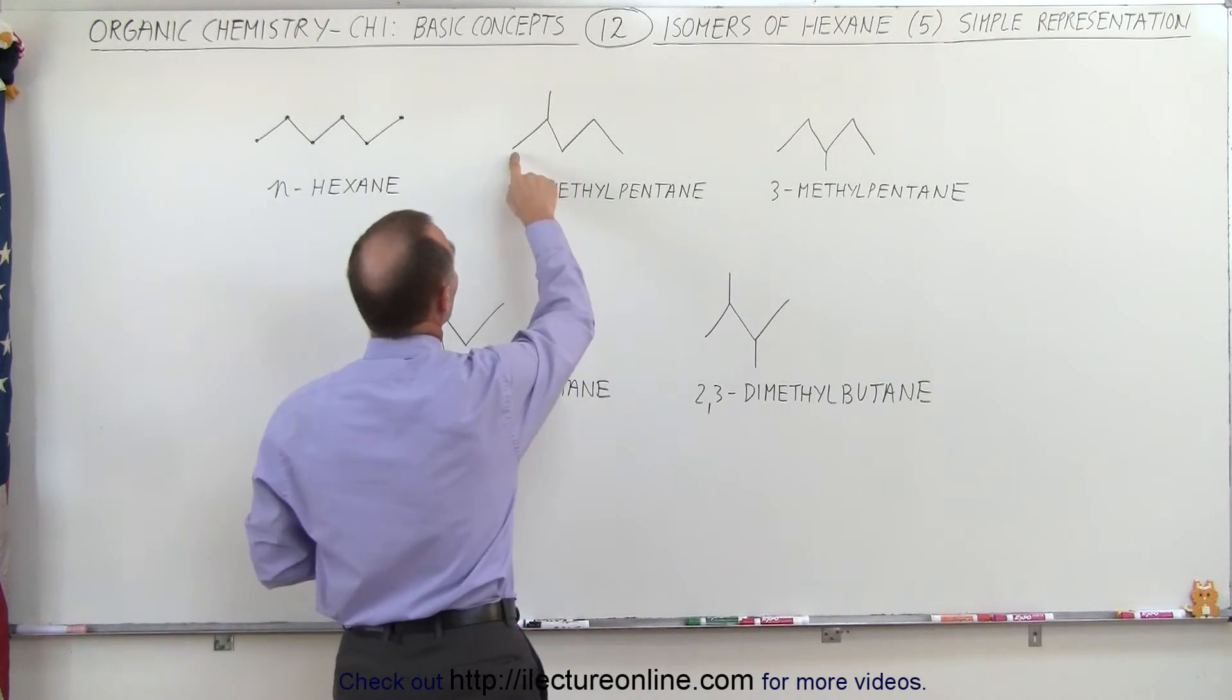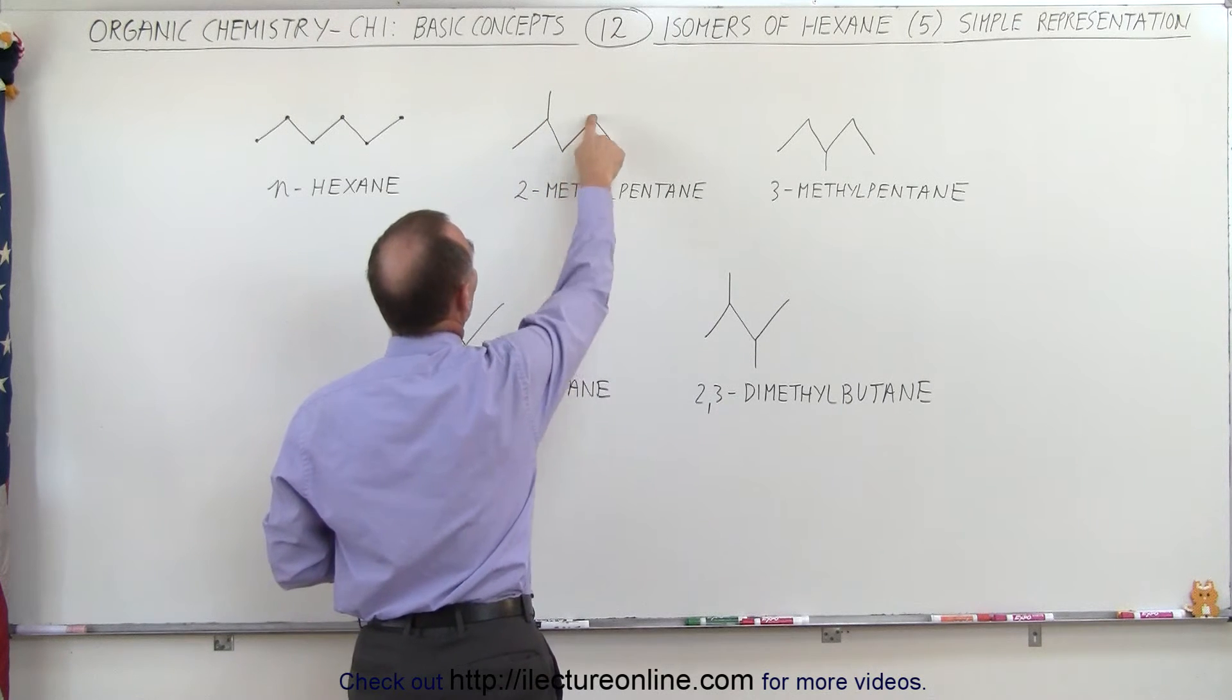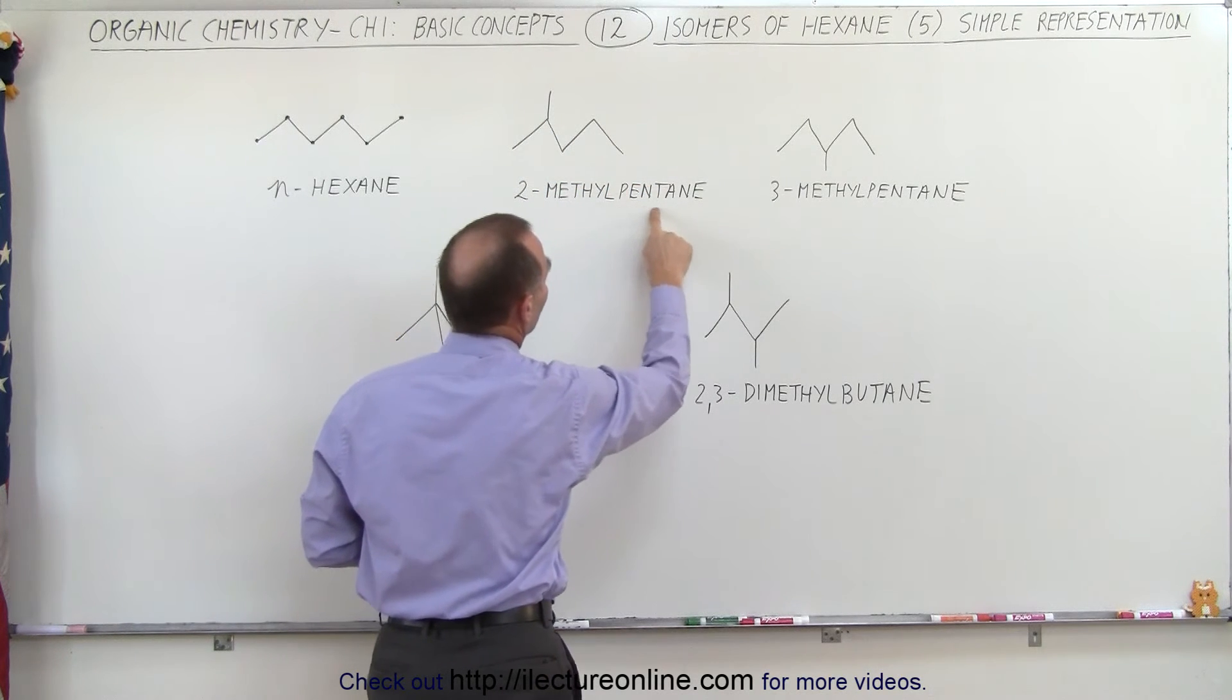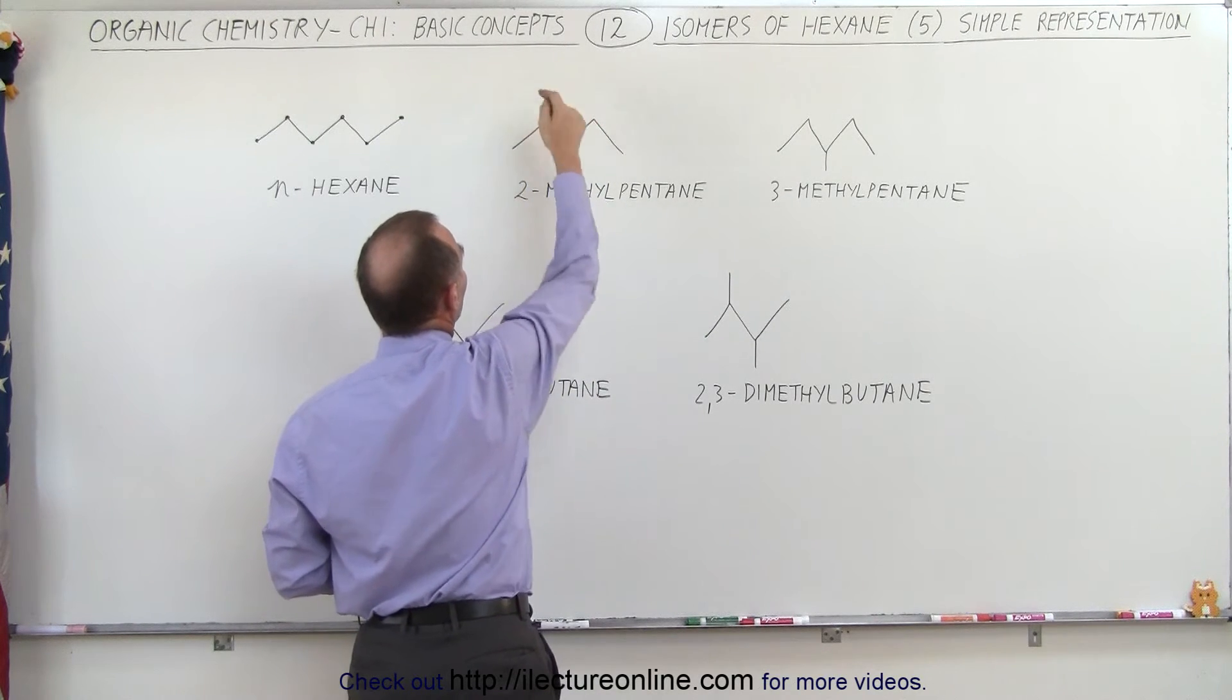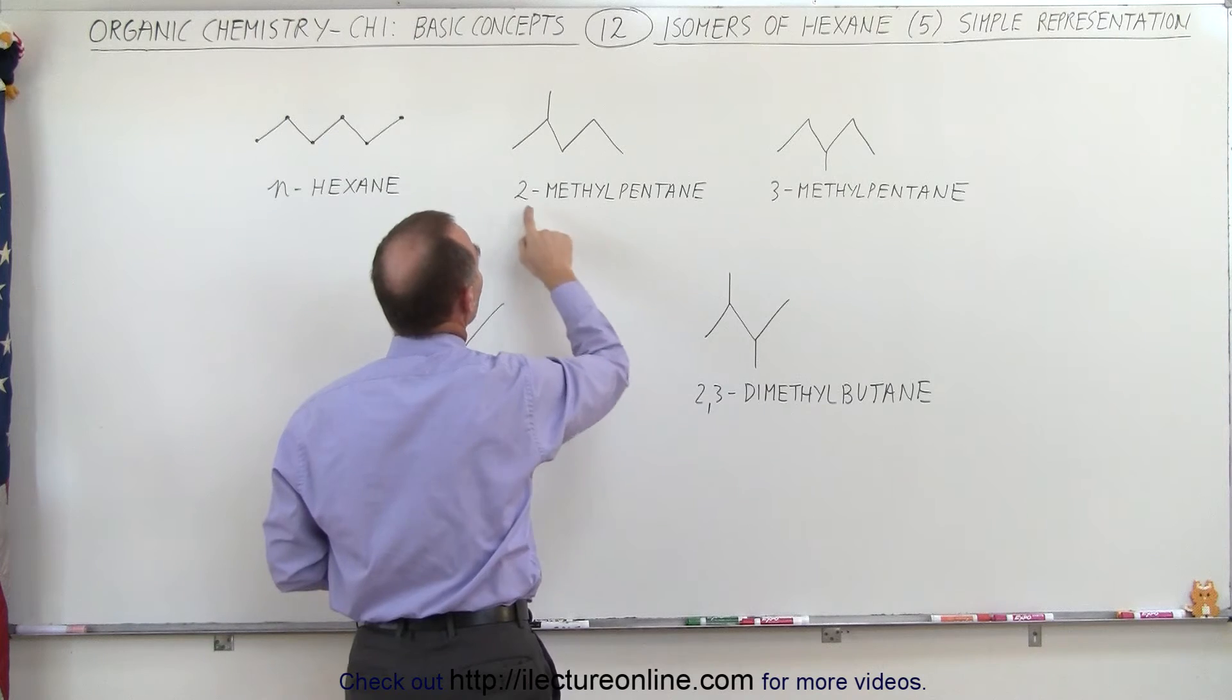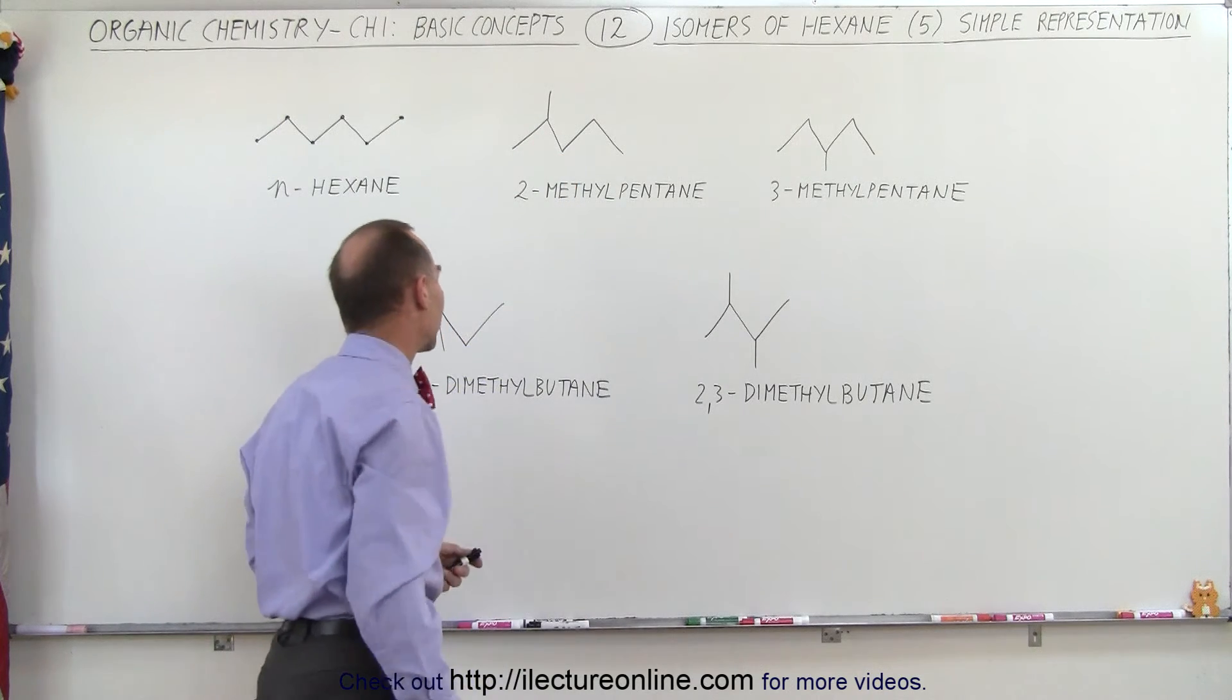Again, the corners represent the carbon, so 1, 2, 3, 4, 5 carbons in the chain, therefore we call it pentane. Here's the methyl group with a carbon at the end. Of course, we imagine it has the three hydrogens, that's the methyl group, 2 because it's connected to the second carbon atom.